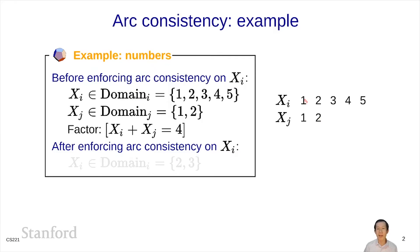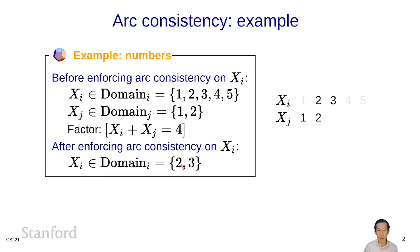Look at 1: does there exist any possible setting of xj so that 1 plus something equals 4? 1 plus 1 is not 4, and 1 plus 2 is not 4. So 1 is just impossible without even knowing the value of xj — eliminate it. What about 2? I can set xj to 2 to get 4, so that's OK. What about 3? 3 plus 1 is 4, so that's OK too. What about 4? I can't add 4 to 1 or 2 to get 4, so that gets eliminated. Same with 5. In the end, enforcing R-consistency on xi results in a smaller domain which only consists of 2 and 3. Notice I can eliminate values without even knowing the exact value of xj.